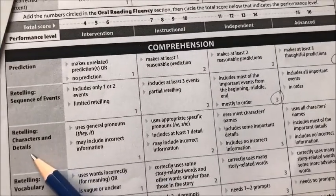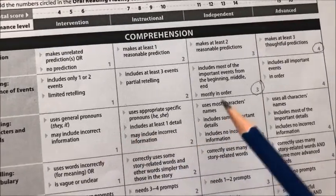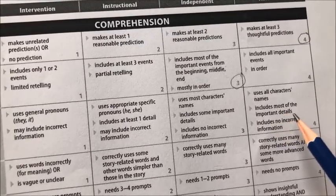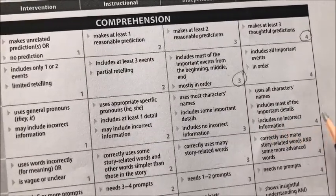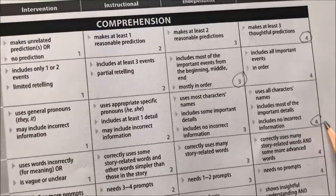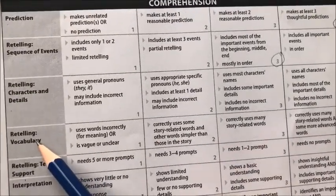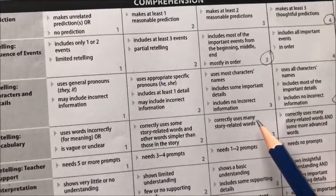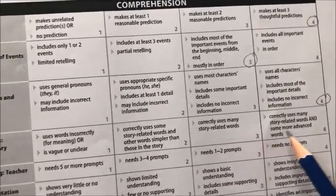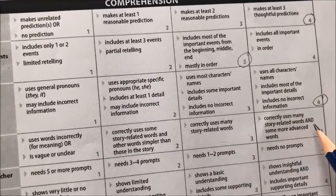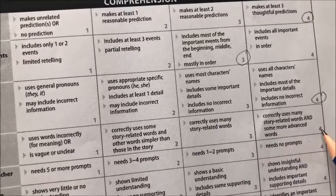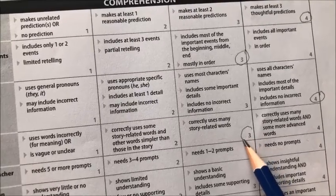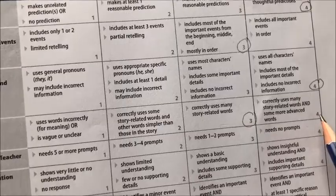For retelling characters and details, the student uses all characters' names, includes most of the important details, and includes no incorrect information, so I'll circle the four here. For retelling vocabulary, the independent descriptor is correctly uses many story-related words, and advanced adds some more advanced words. I'm going to circle the three here because I don't recall any advanced words being used.